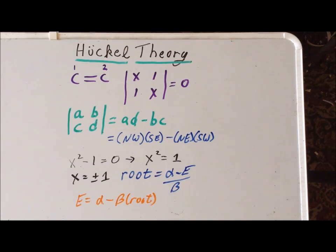For one of the roots, since one root is minus one, that gives us the case where the energy is alpha plus beta. If we use the case where the root is plus one, that gives us the energy alpha minus beta.